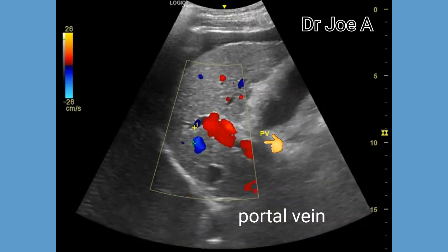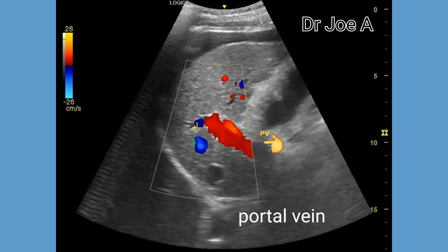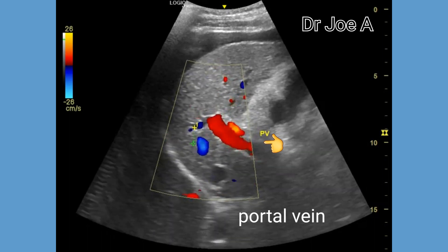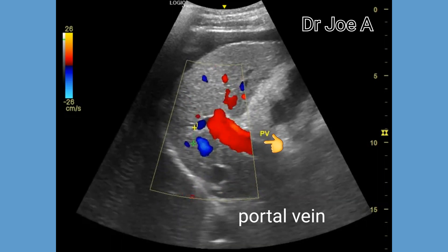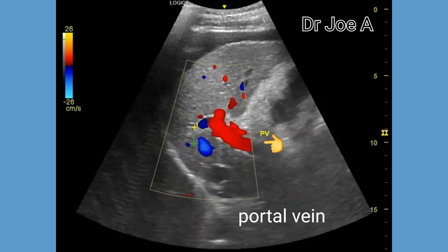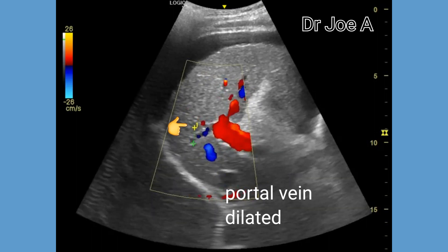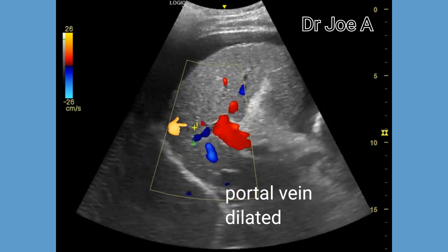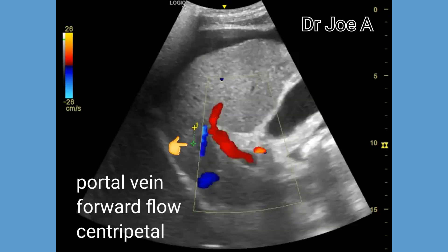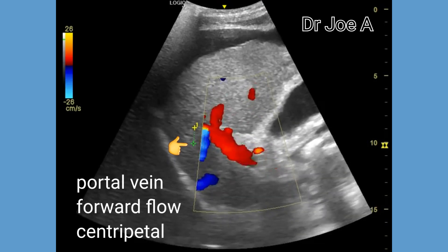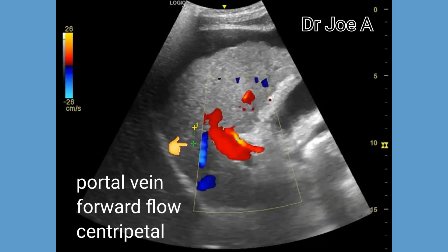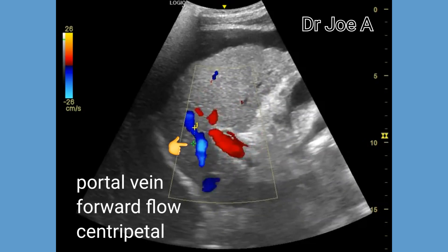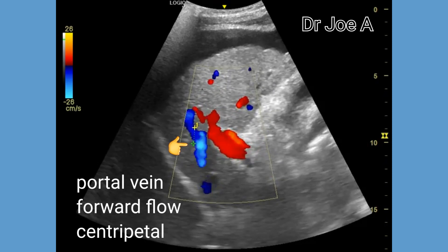Next we come to the portal vein. On color Doppler, the flow in the portal vein appears centripetal — that is, flow towards the liver. This is another good sign. The portal vein, though moderately dilated, does not show reverse flow. Forward or centripetal flow in the portal vein is seen in red color. If the flow were reversed, it would indicate a very poor prognosis for this patient.